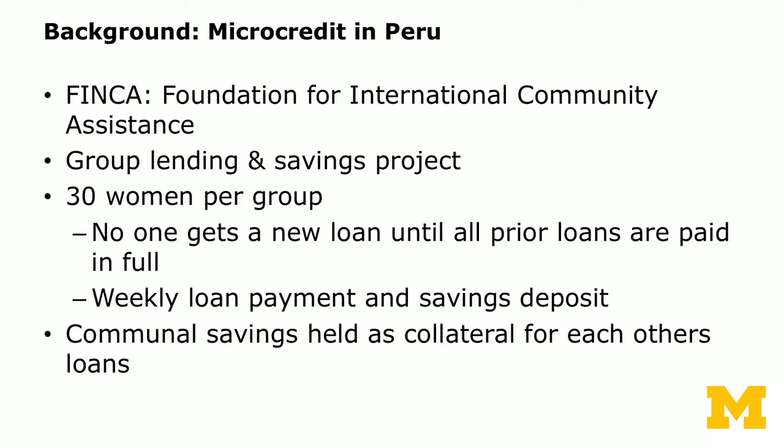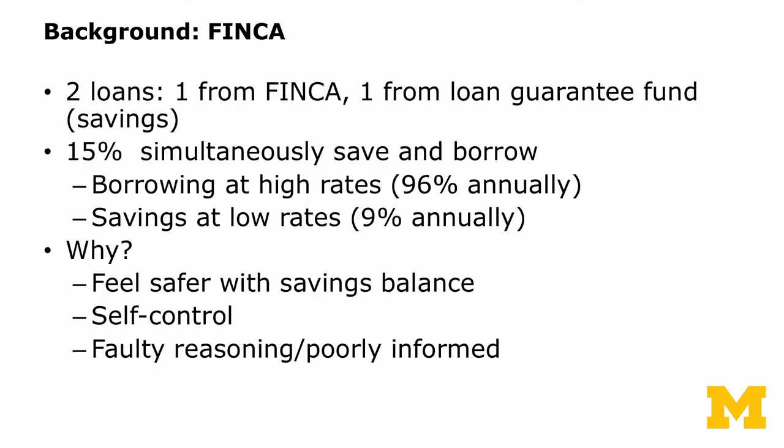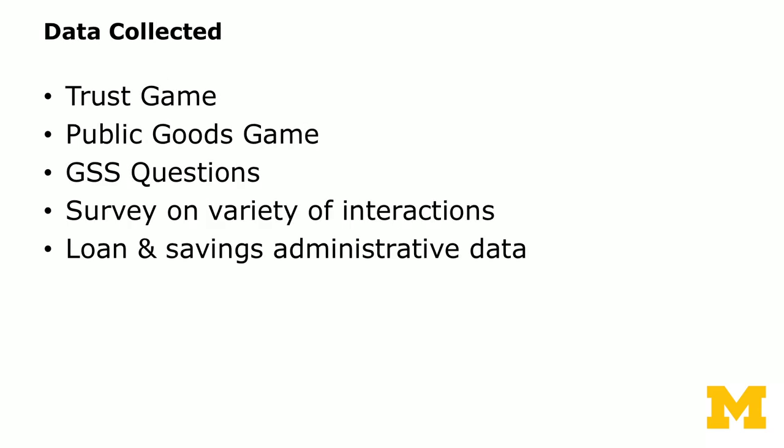The microcredit program is called FINCA in Peru — short for Foundation for International Community Assistance. It is a group lending and savings project with usually 30 women per group, where no one gets a new loan until all prior loans are paid in full, with weekly loan payments and savings deposits. Communal savings are held as collateral for each other's loans. The data collected includes the trust game, a public goods game, General Social Survey questions, survey on interactions, and loans and savings administrative data.